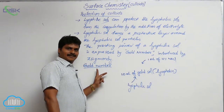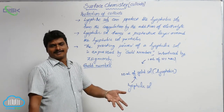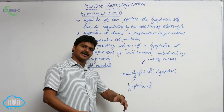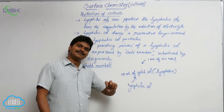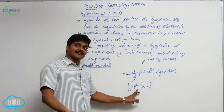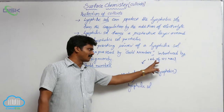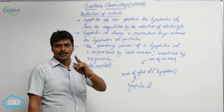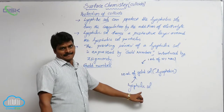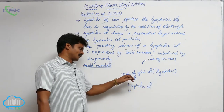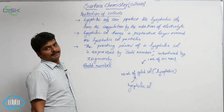Gold number is the measure of the protecting power of lyophilic salt. The minimum mass of lyophilic salt in milligrams that must be added to 10 ml of gold sol to protect its coagulation by the addition of 1 ml of 10% NaCl is called gold number.